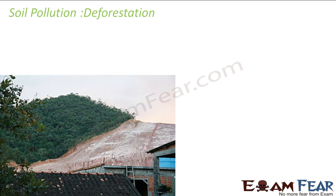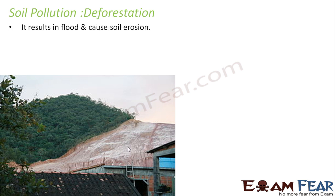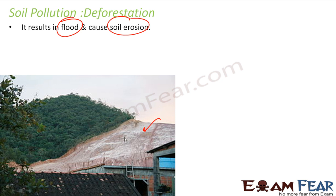The next major cause of soil pollution is deforestation. When all the trees are removed, deforestation results in floods that cause soil pollution, and it also causes soil erosion — because without trees, the upper layer of soil can be blown away by wind.